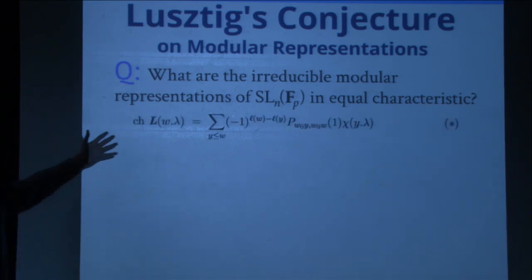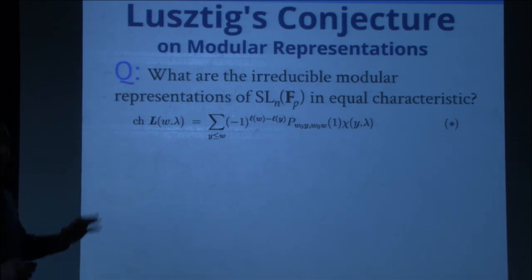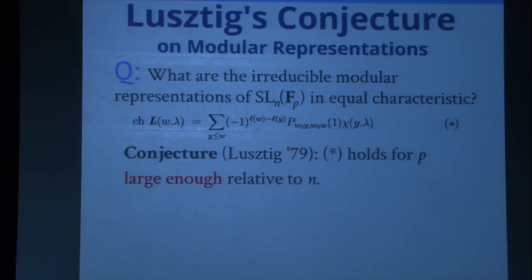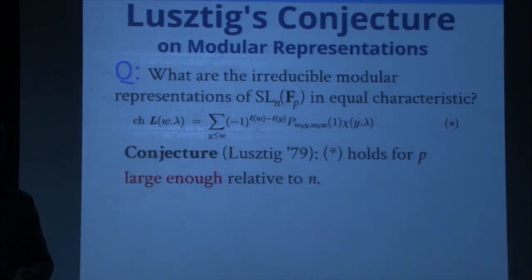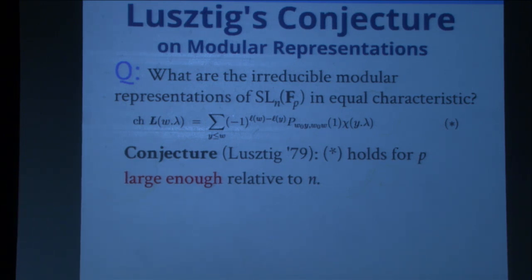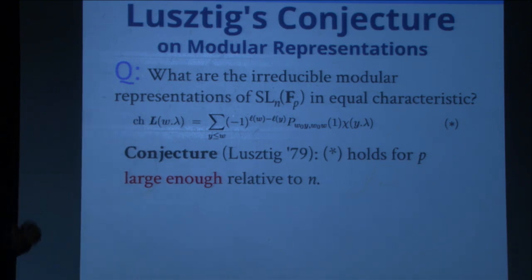Lusztig's conjecture in equal characteristic asks for irreducible representations of SL_N(F_p) over characteristic-p vector spaces. The conjecture is an equality involving Kazhdan-Lusztig polynomials at special values and the character table. It's supposed to hold as soon as the characteristic is large enough relative to the Coxeter number — for SL_N, the Coxeter number is N minus 1. In equal characteristic, it should look just like the complex representation.